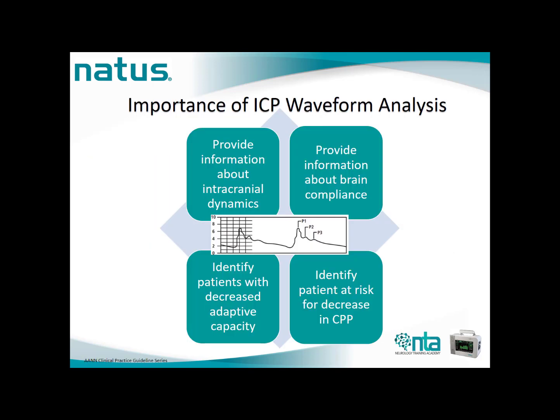Understanding the ICP waveform allows the clinician to do a great deal. We can learn a lot of information about the injured brain just by looking at the ICP waveform displayed on the Camino monitor. The waveform can provide information about intracranial dynamics and brain compliance. Through monitoring of the ICP waveform, we can identify patients with decreased adaptive capacity and early identify patients at risk for decreasing CPP.